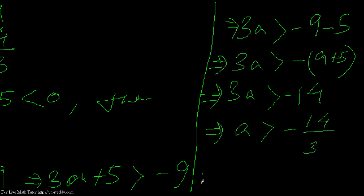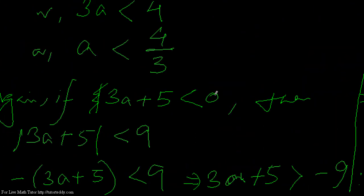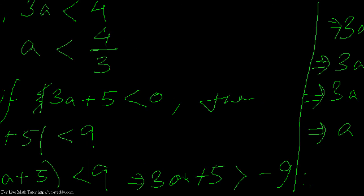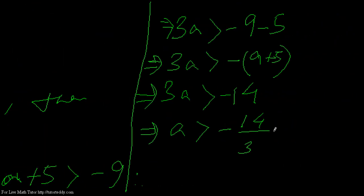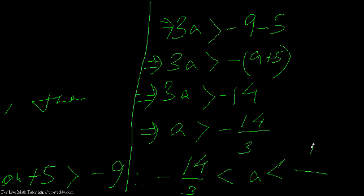From these two results, we have a is less than 4 by 3 and a is greater than minus 14 by 3. Combining both, a must lie between minus 14 by 3 and 4 by 3. So the required solution is: minus 14 by 3 is less than a less than 4 by 3.